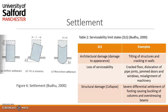It is impossible to prevent settlement of a foundation entirely, but as an engineer you want to prevent the foundation from reaching its serviceability limit state, shown in Table 2. Table 2 shows different types of serviceability limit states: architectural damage includes cracking of walls and tilting of buildings. Loss of serviceability includes cracked floors, dislocation of pipe joints, jammed doors and windows, and misalignment of machinery. Structural damage or collapse includes severe differential settlement of footings, causing buckling of columns and overstressing of beams — all conditions the engineer aims to prevent.